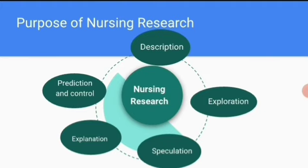The next topic is the purpose of nursing research — why research in nursing? There are five areas covered with the help of nursing research. The first one is description: if you want to describe anything according to your view or describe any part of the nursing discipline, we need to have research.